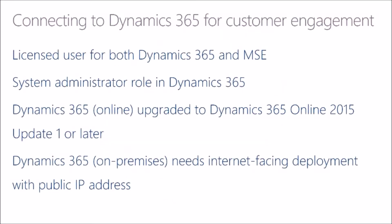In order to make use of this automation, you'll need to configure and authenticate the application. To connect to it, you'll need to be a licensed user for both Dynamics 365 and Microsoft Social Engagement, and you'll need the system administrator role within Dynamics 365. For the online version, you need to be upgraded to at least Dynamics 365 Online 2015 Update 1 or later. On premises, you'll need Dynamics 365 with internet-facing deployment with a public IP address.